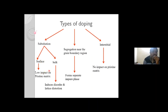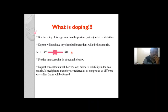Surface doping will always have less impact on the host matrix — less impact in terms of structural and optical properties. Whenever segregation near the grain-boundary region appears, a composite structure is formed, where the dopant interacts with the oxygen of the host lattice to form its own oxides.